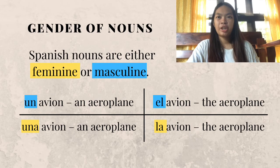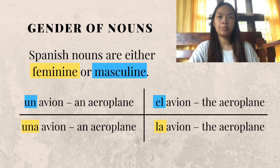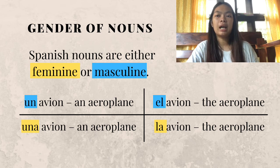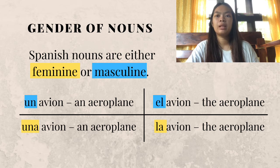Gender of nouns: Spanish nouns are either feminine or masculine. There are also articles that are often used before nouns. For example, 'Un avion' means 'An airplane,' and 'El avion' means 'The airplane.' 'Una avion' means 'An airplane,' and 'La avion' means 'The airplane.' As you can see, un and el — shown in blue — are used for masculine, while una and la — shown in yellow — are used for feminine.